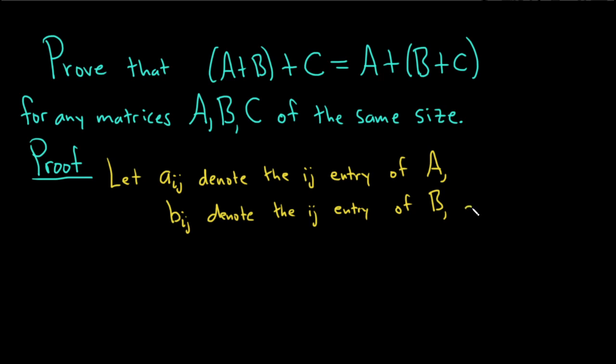And lastly, C sub ij, or C_ij, denote the ij entry of C.